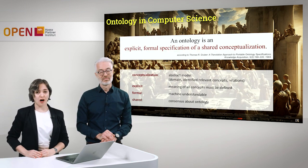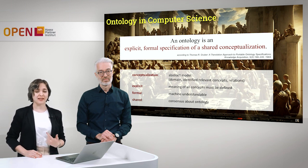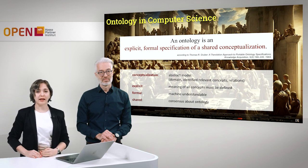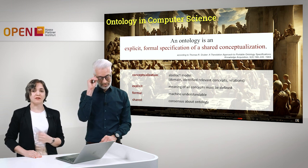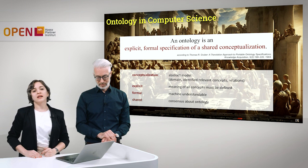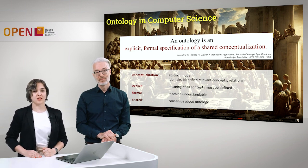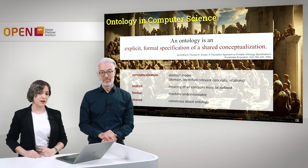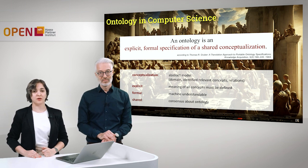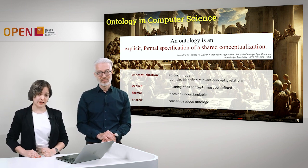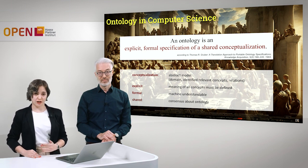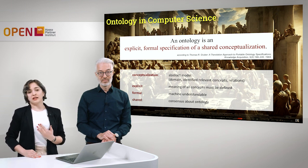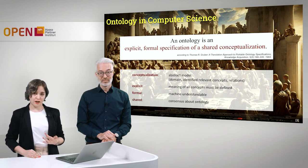First of all, an ontology is a kind of conceptualization — an abstract model that tries to describe a particular domain, identifying the relevant concepts and relations in that domain. An ontology also has to be explicit, meaning the meaning of all concepts must be defined; there cannot be concepts left undefined. An ontology has to be formal, meaning it must be machine understandable — the machine has to be able to interpret it. And finally, it has to be shared: if an ontology is not shared, it is only useful for its creators, and there has to be some consensus so that it can be used by other persons as well.